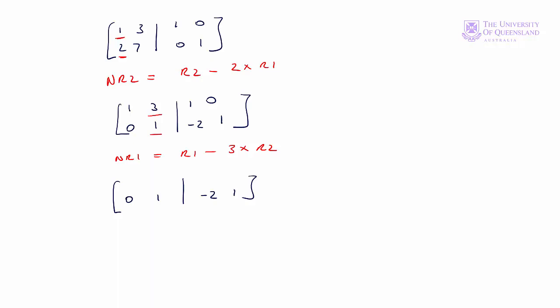We subtract 3 times row 2 from row 1. The 1 in the top left-hand corner stays the same — we're just subtracting 0. Subtracting 3 times 1 from 3 gives 0. We also do the same to the right-hand side: subtract 3 times (−2) from 1, giving plus 7, and subtract 3 times 1 from 0, giving minus 3. This implies A inverse equals [7, −3; −2, 1]. That's the procedure with this simple example.